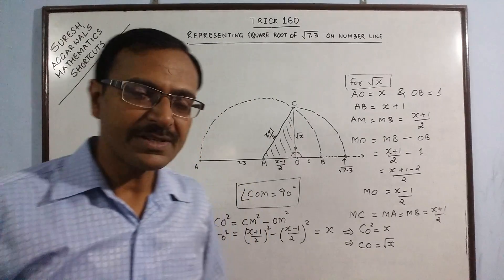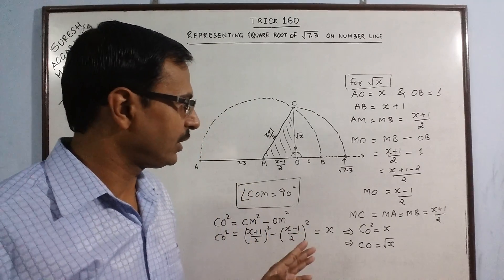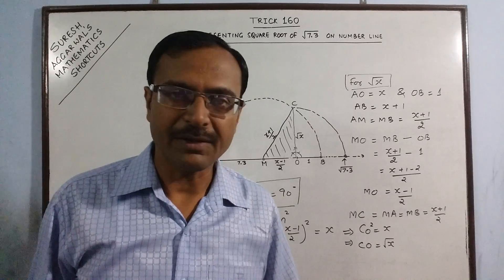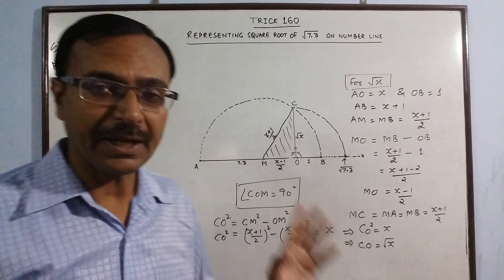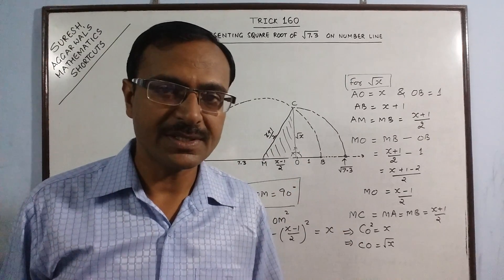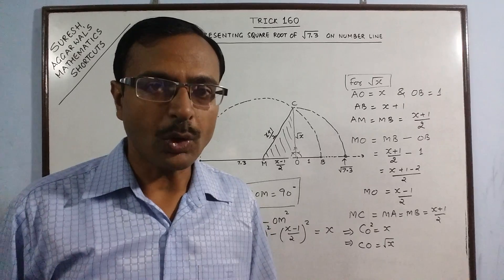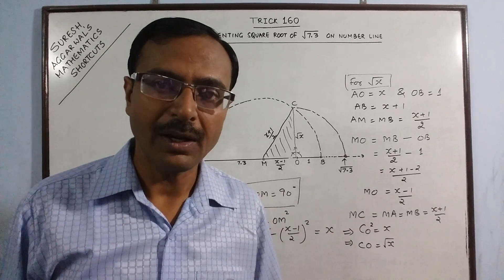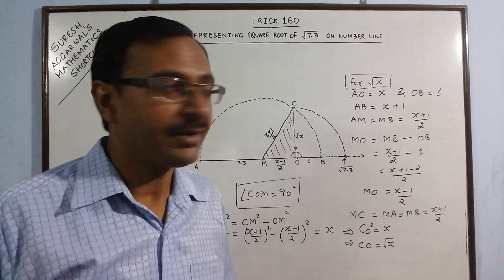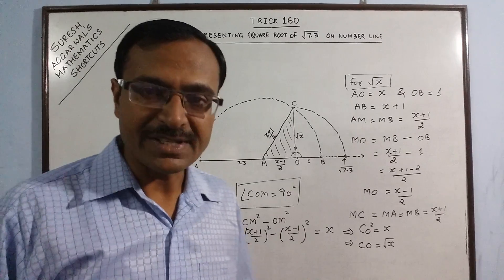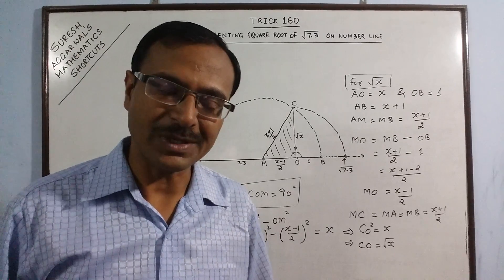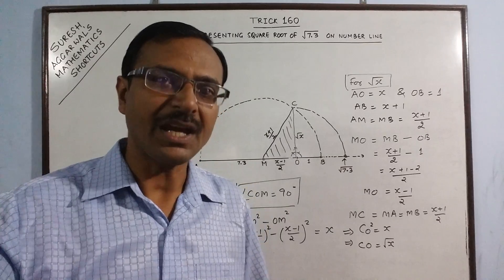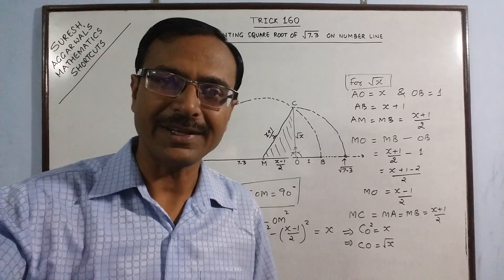This completes our two videos on representing irrational numbers on a number line. In the first video, in Trick 159, I told you how to represent the square root of whole numbers on a number line using the square root spiral. In this video we have done the square roots of decimal numbers on number line. So keep learning, keep loving mathematics, and share and subscribe the channel if you like it.